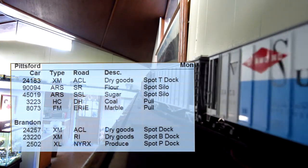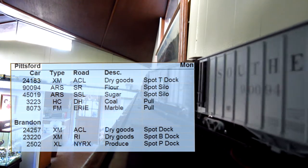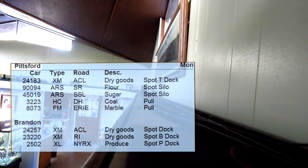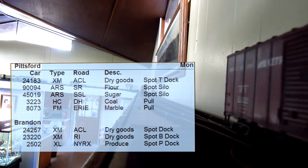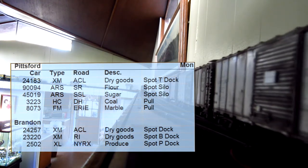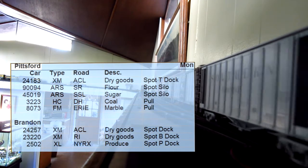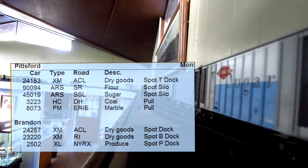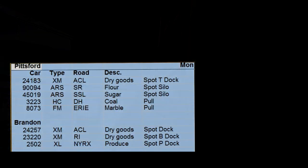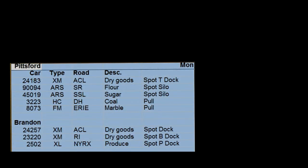Looking at my work order list, I have the Pitchfork siding and the Brandon siding — all the cars that need to be dropped off and picked up. We have 24-183, a boxcar with dry goods going to Pitchfork, and also a flour hopper and a sugar hopper. Going down to Brandon: 24-257, a boxcar going to the dock. Another box, the 2502, is not with us today so we won't be dropping that one off.